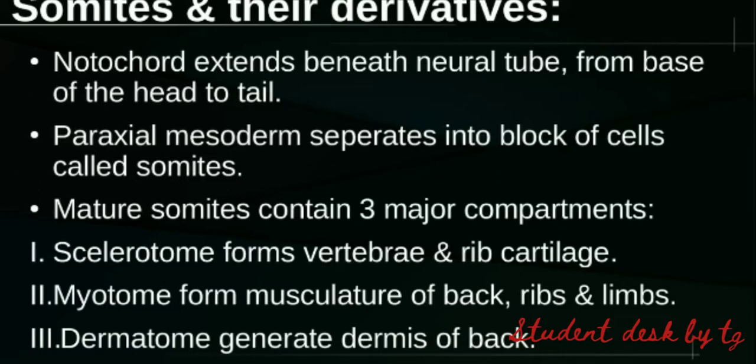Vertebrae and rib cartilage are produced by the sclerotome compartment. So the first compartment of the somite is called the sclerotome, which generates vertebrae and rib cartilage.